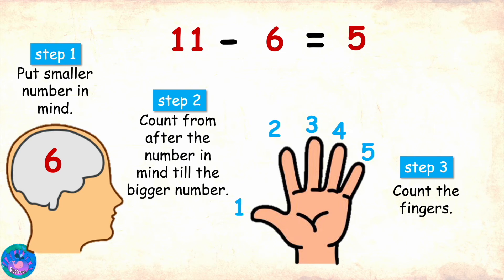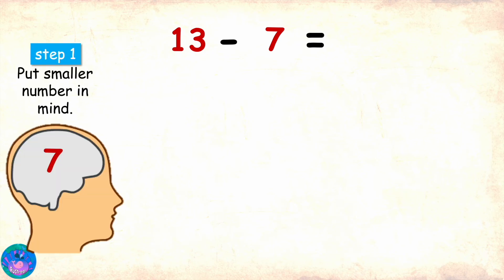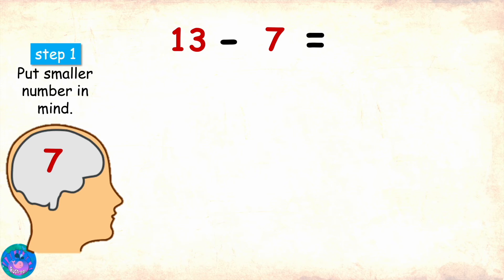Yes please, I would love that. Now I'm going to give you 13 minus 7. Okay, so step 1, put the smaller number in mind. I'm going to put 7 in my mind. Step 2, count from after the number in mind till the bigger number. Bigger number is 13, number in mind is 7, so counting from after 7 till 13.